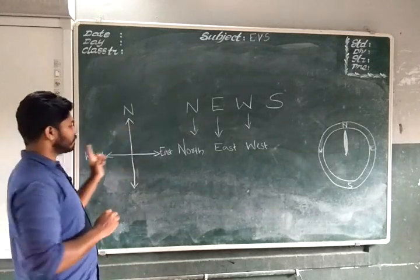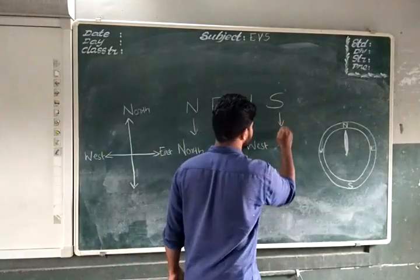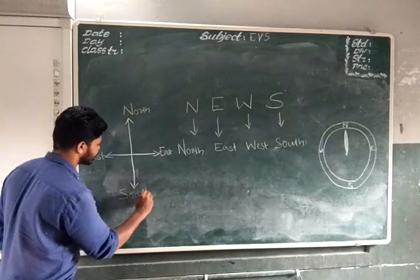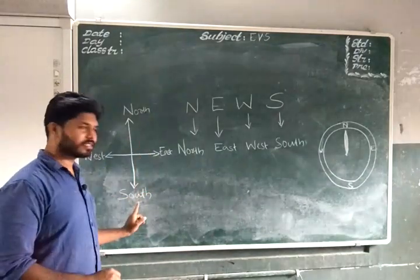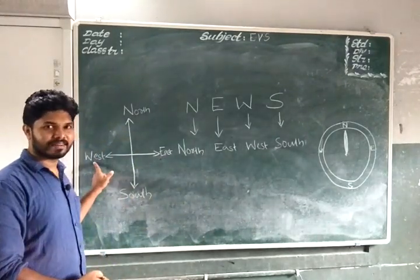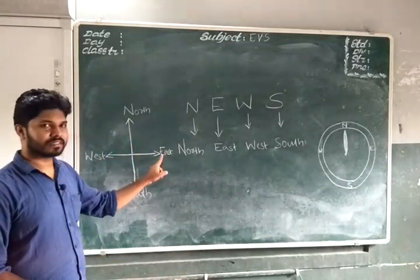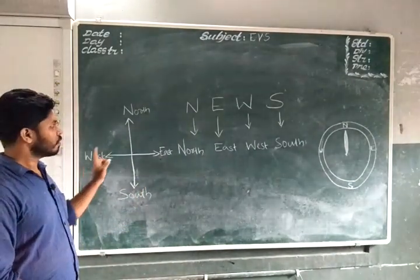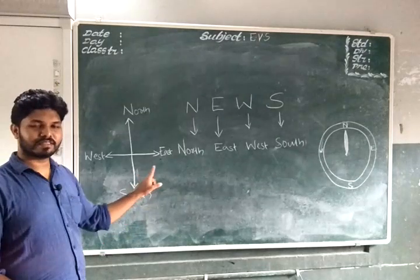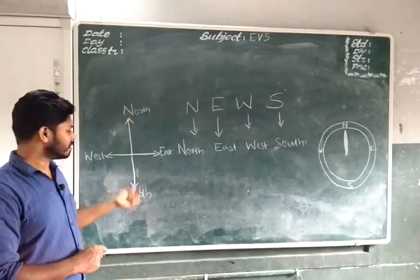Here you can see West on the left. North is in the top portion, South is in the bottom portion, East is on the right, and West is on the left. The four directions are North, East, West, South — or North, East, South, West. East is on the right, West is on the left, North is at the top, and South is at the bottom.